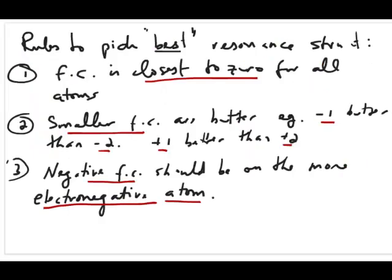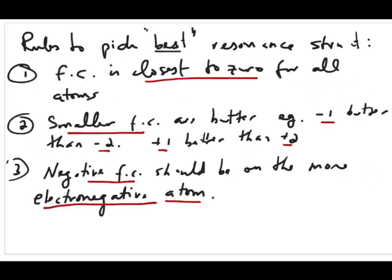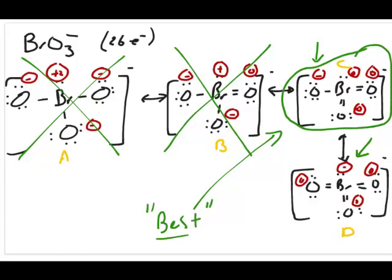Rule two says smaller formal charges are better. Both C and D have negative one with the other three atoms at zero, so that rule doesn't help distinguish them. Going to rule three: negative formal charges should be on the more electronegative atom. In structure C, the negative formal charge resides on oxygen, whereas in structure D it resides on bromine. Oxygen is more electronegative than bromine, so using all three rules, we conclude that structure C is the best structure — the one most representative of the experimental structure.